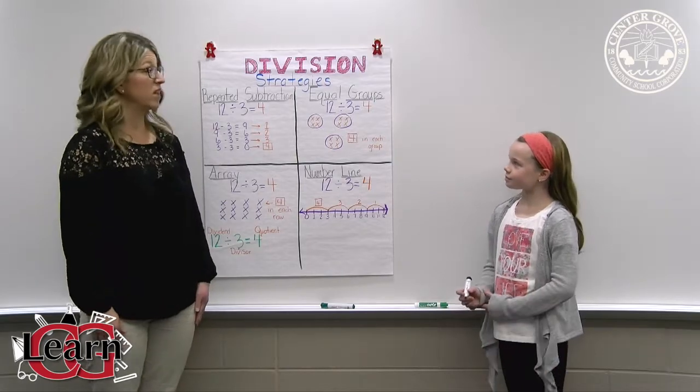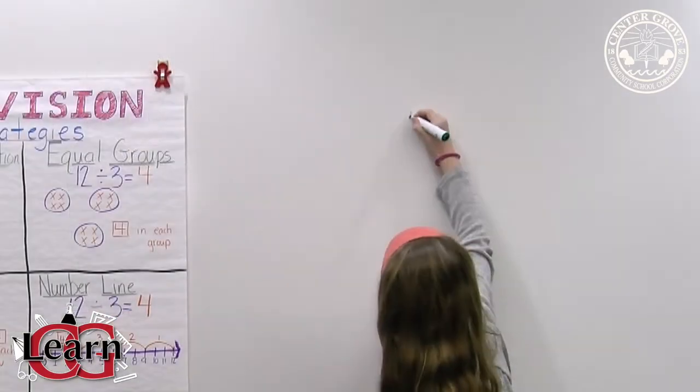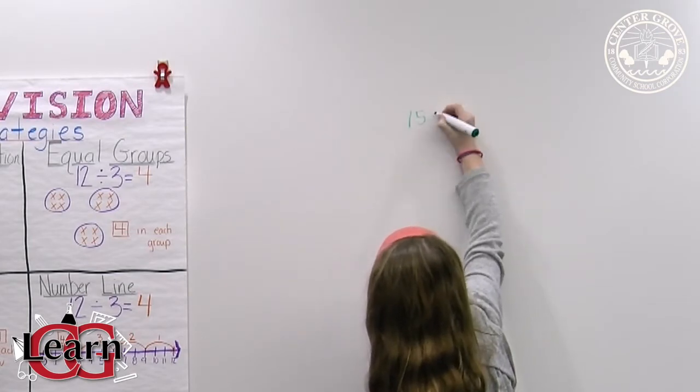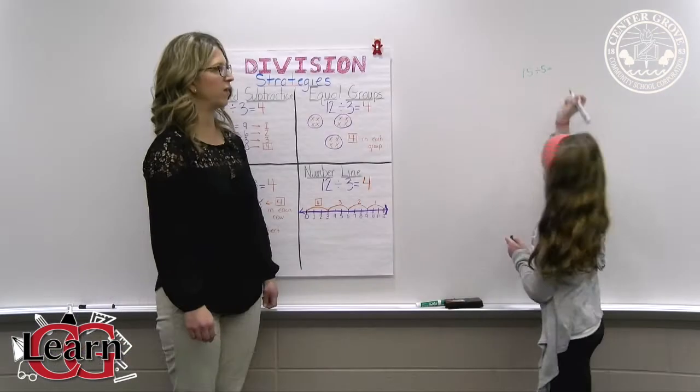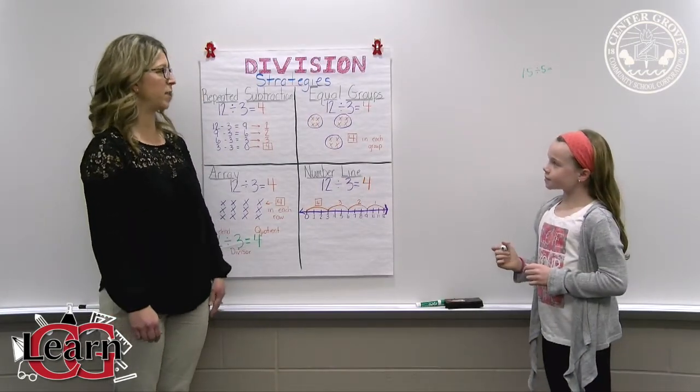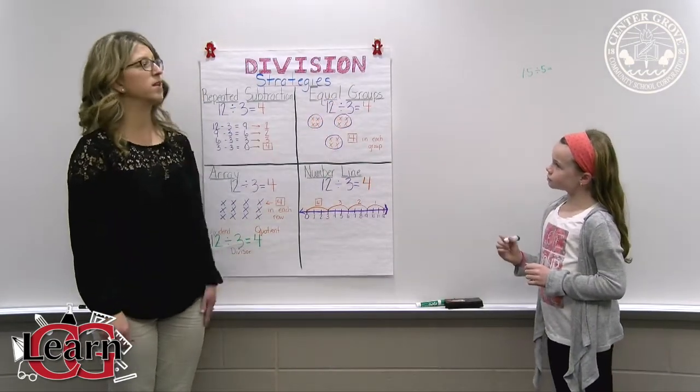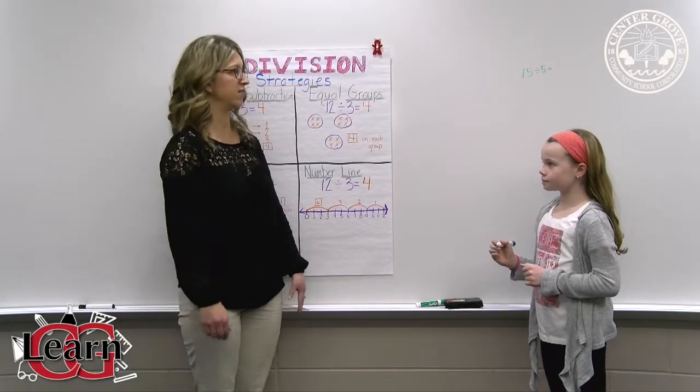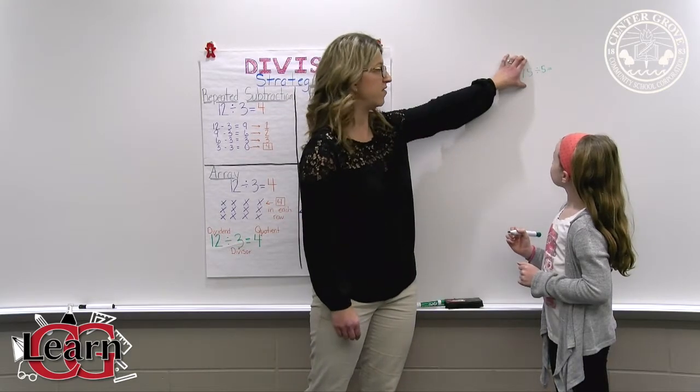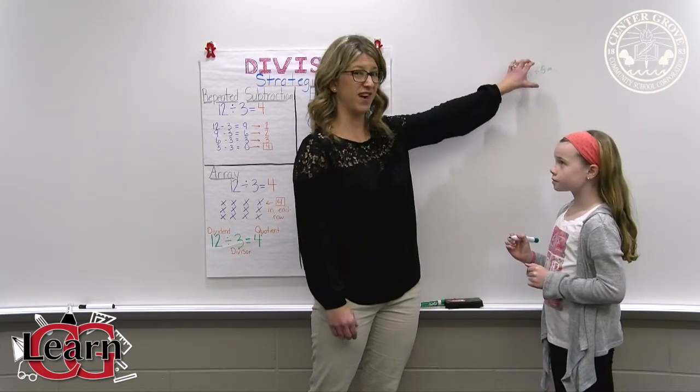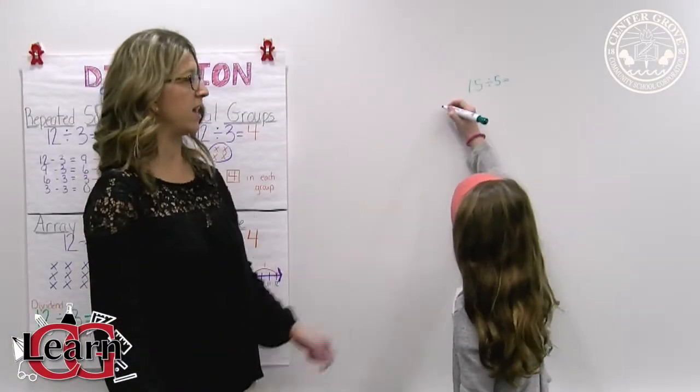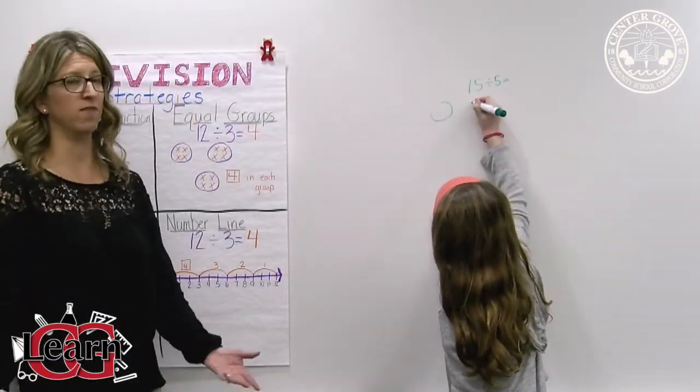So we're going to start with 15 divided by 5. The first strategy that we are going to show with 15 divided by 5 is equal groups. So the first thing that Harper needs to understand is that we have 15 of something and we are going to take that 15 and divide it into five equal groups. So the first thing she's going to do is draw five circles. Those are our five groups.